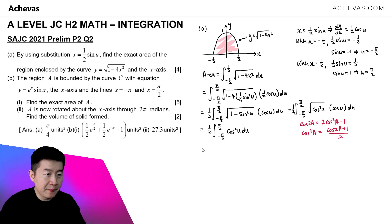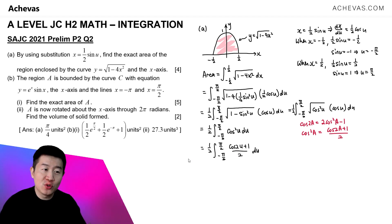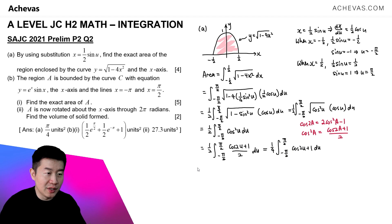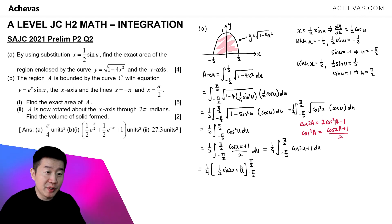Replacing cos²(u) with the identity, we have ½ times the integral from -π/2 to π/2 of (cos(2u) + 1)/2 du. Taking the 2 out gives us ¼ times the integral from -π/2 to π/2 of (cos(2u) + 1) du. This is straightforward to integrate: integrating cos(2u) gives ½sin(2u), and integrating 1 gives u. So we evaluate [½sin(2u) + u] from -π/2 to π/2.